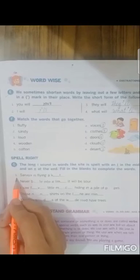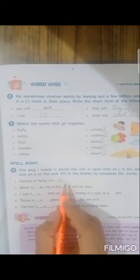Fill in the blanks to complete the words. The first sentence is, Sanaya is flying a dash. What can be the word? K-I-T-E. Kite.